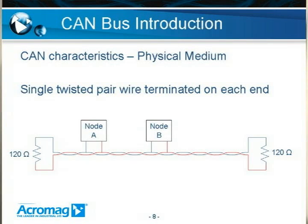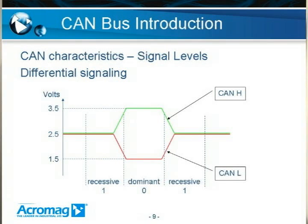The physical medium used by CAN is a single twisted pair of wire, terminated on each end with a 120-ohm termination network. This slide shows two nodes connected to the twisted pair, and also shows what you would see on an oscilloscope looking at the CAN high and CAN low signals on the bus.